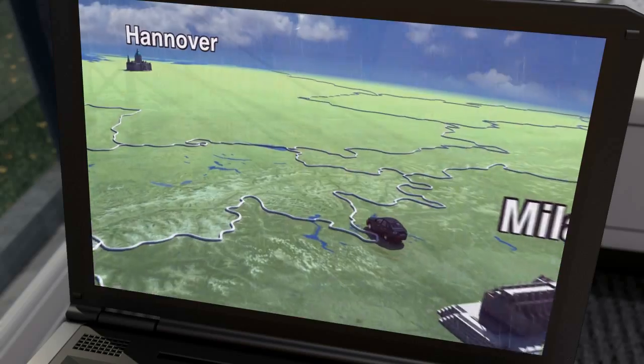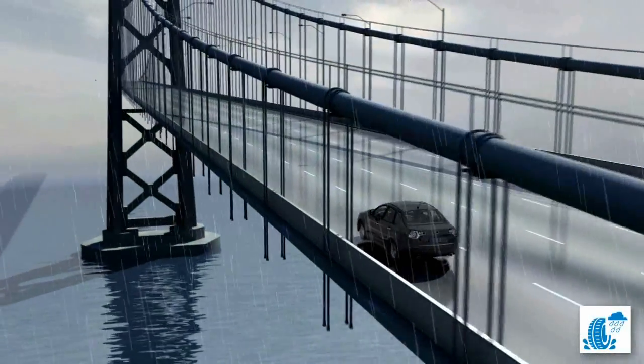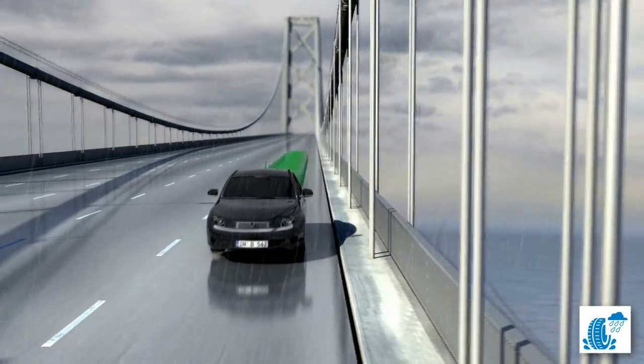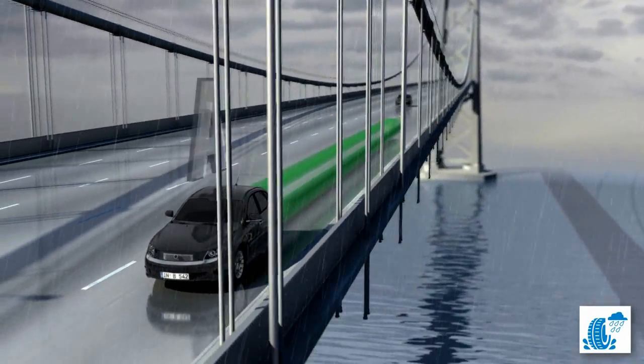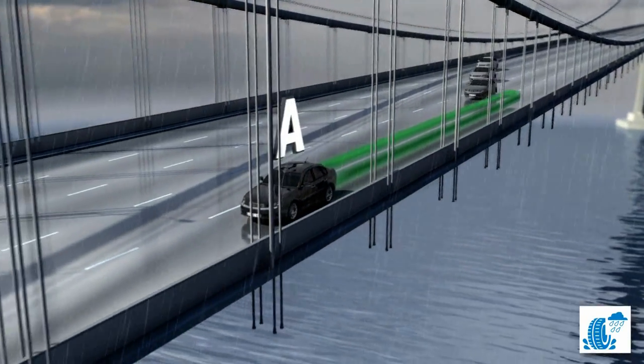What about braking distance on wet roads? Tina does the test. A car with tyres in braking distance class A stops in the shortest time from a speed of 80 kilometres per hour, that's 50 miles per hour.